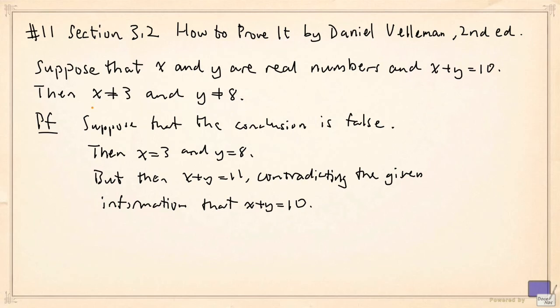Now how do you fail this condition? Well, you fail this condition if either x is 3 or y is 8 or both. So the negation of this is not this.